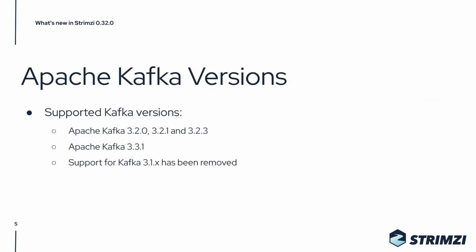One of the new main features in this release is support for Apache Kafka 3.3.1. Together with it, this version also supports Kafka 3.2.0, 3.2.1, and 3.2.3. Support for the older Kafka versions has been removed. If you are wondering why Kafka 3.3.0 is missing from this list, it's because a bug was found immediately before the release and that's why it was right away superseded by the 3.3.1 release.